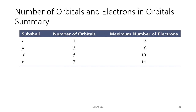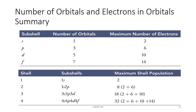In summary: any s subshell has one orbital and a max of two electrons; any p subshell has three orbitals and a max of six electrons; any d subshell has five orbitals and a max of ten electrons; any f subshell has seven orbitals and a max of fourteen electrons. The first shell holds only a 1s subshell; the second holds 2s and 2p; the third holds 3s, 3p, and 3d; and the fourth holds 4s, 4p, 4d, and 4f.